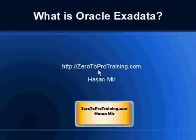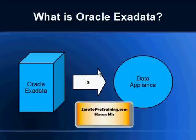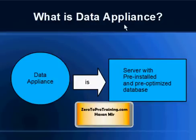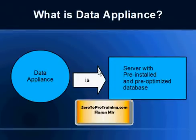Hello, the topic for this video is 'What is Oracle Exadata?' This is Hassan Mir from Zero2ProTwinning.com. Oracle Exadata is a data appliance. A data appliance is a server or computer that comes with a pre-installed and pre-optimized database. For example, if you want a database on your computer, one option is to buy hardware from one vendor and a database from another, install the database on that hardware, and have a solution.